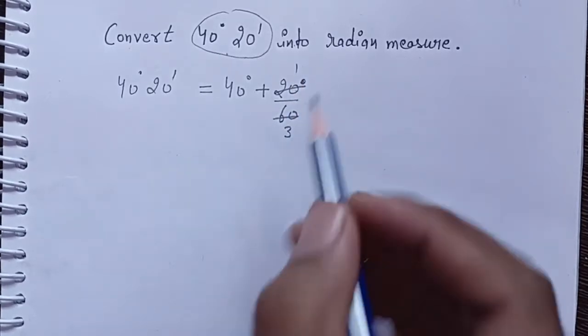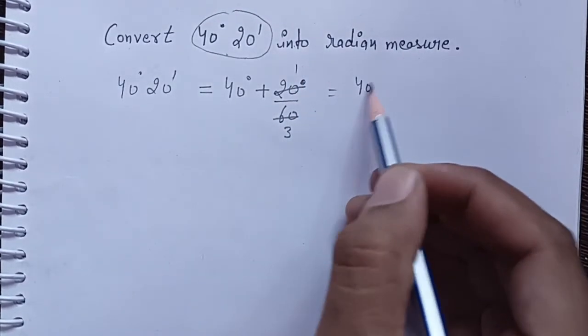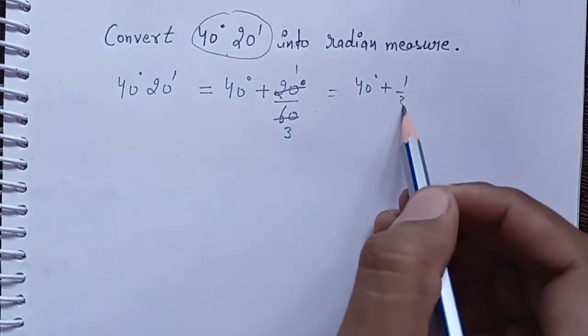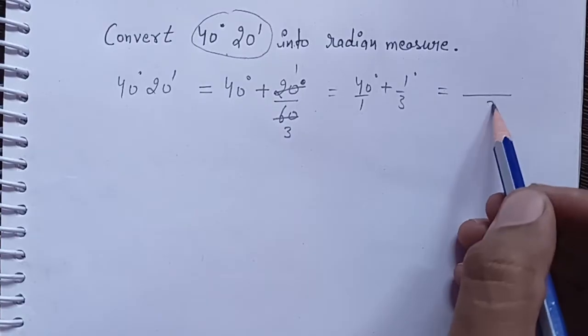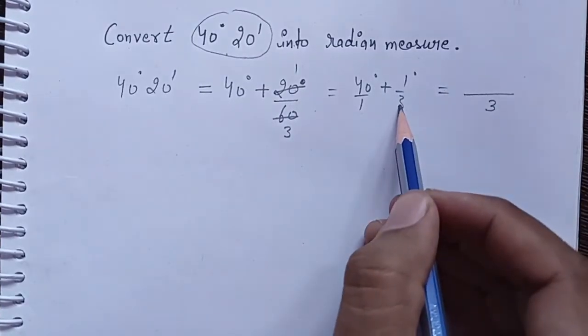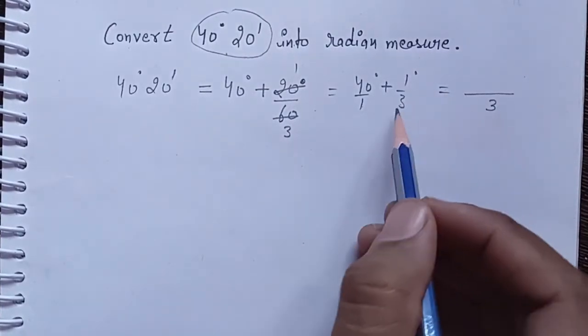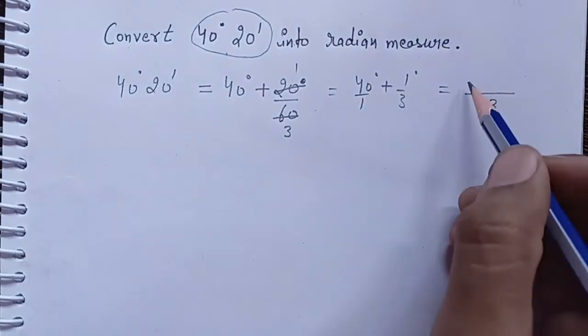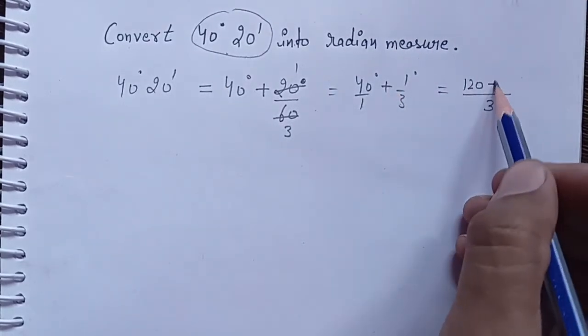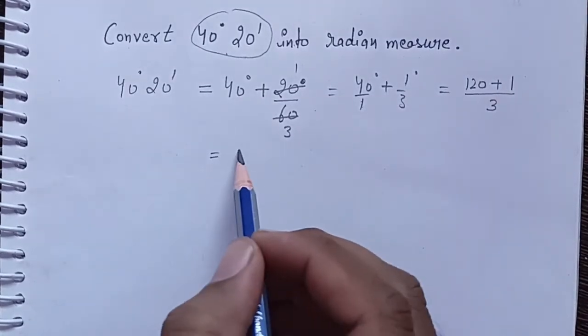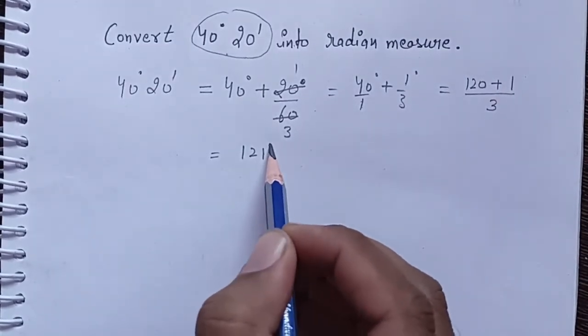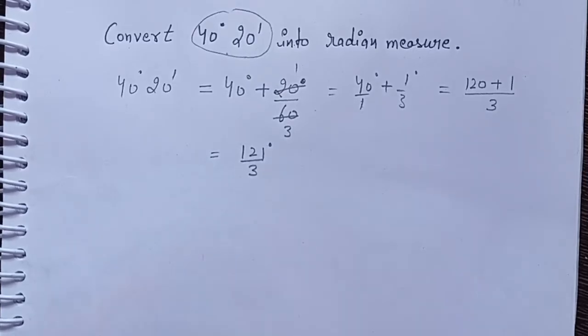Solve by 1 and 3. Our answer is 40 degree plus 1/3 degree. Take LCM 3, so 3 into 40 is 120 plus 1 times 1 is 1. So our answer is 121 degree by 3.